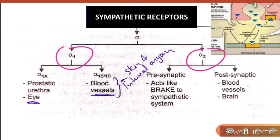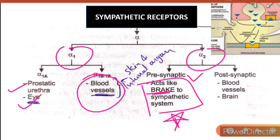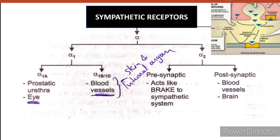The sympathetic receptors are of two types: alpha and beta. Alpha is further divided into alpha-1 and alpha-2. Alpha-1a is present on the prostate, urethra, and eye. Alpha-1b is present on blood vessels. Alpha-2 receptors on the pre-synaptic site act like a brake to the sympathetic system, whereas on the post-synaptic site, alpha-2 receptors are present on blood vessels and brain.